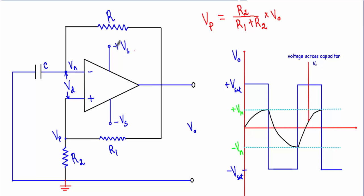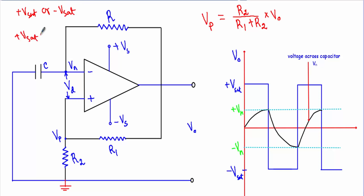This is the circuit structure of the op-amp astable multivibrator. The output terminal is connected to the inverting terminal through a feedback resistor R, and the inverting terminal is connected to ground through capacitor C. The output terminal is also connected to the non-inverting terminal through resistor R1, and the non-inverting terminal is connected to ground through resistor R2. With this configuration the op-amp is forced into saturation, giving output either at plus Vsat or minus Vsat, which are nearly equal to the positive and negative supply voltages respectively.